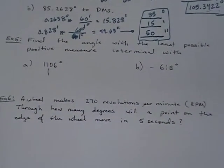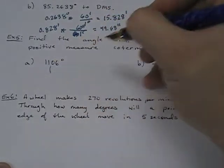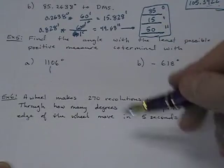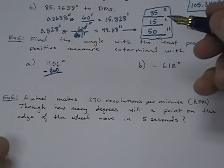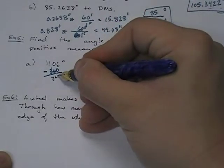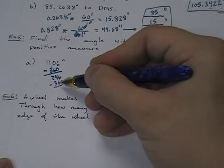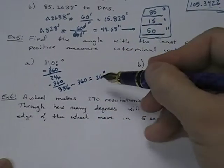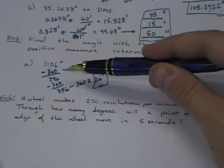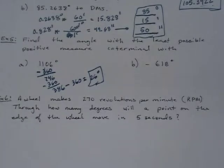I've given you two questions where I say, here's a particular angle — find the angle with the least positive measure that's co-terminal with it. I've got 1106. Co-terminal angles differ by increments of 360, so I subtract 360: 1106 minus 360 is 746, minus 360 is 386, minus 360 is 26 degrees. 26 is our answer because they ask for the angle with the least positive measure.